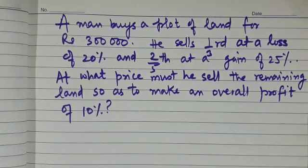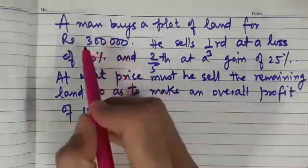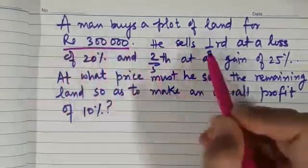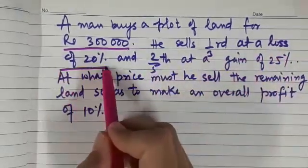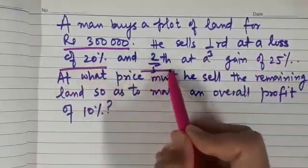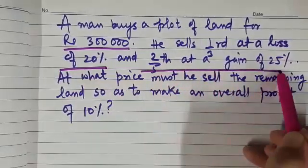This is a very interesting question. A man buys a plot of land for rupee 3 lakh. He sells one third of it at a loss of 20% and two fifth at a gain of 25%.